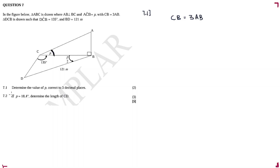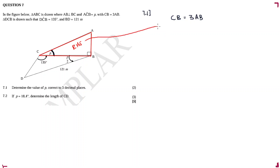Question 7.1 asks us to determine the value of P correct to three decimal places — so they want us to find angle P. I'm thinking we have to use triangle ABC because that's where P is. Since it's a right angle triangle, we have to use SOH-CAH-TOA. Unfortunately, I don't have any of the actual side lengths, and to calculate angle P I would need two sides — this is where the given relationship comes to the rescue.